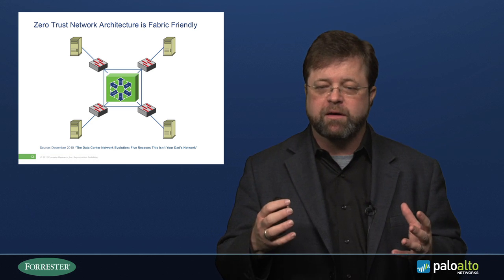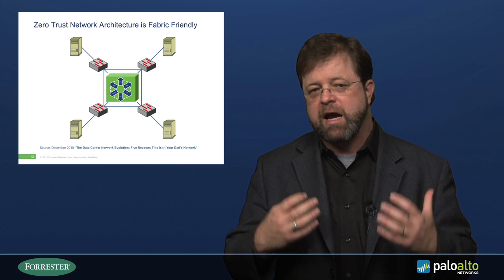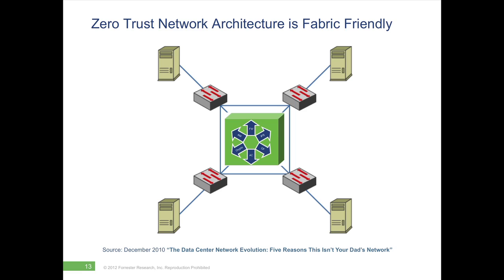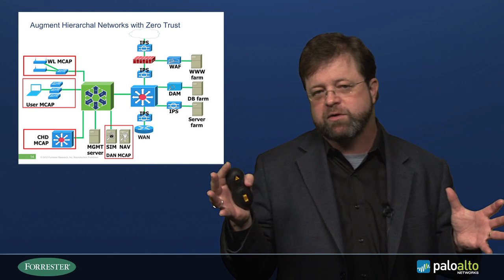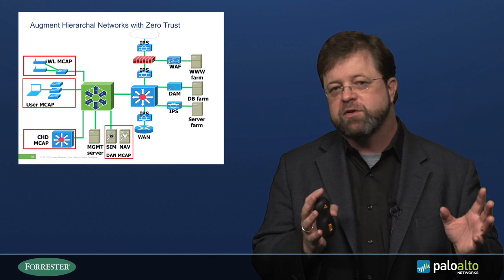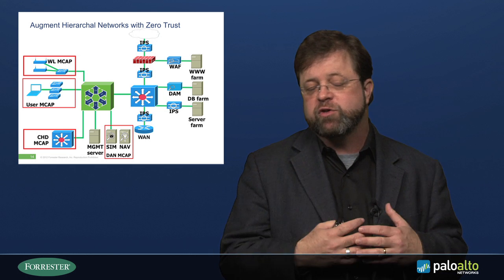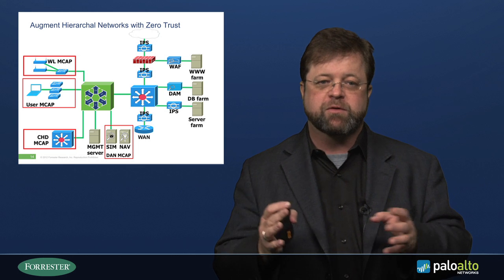Zero Trust is also very fabric-friendly. The advent of fabric networks makes it even easier to deploy Zero Trust and adopt Zero Trust concepts. We can simply place the segmentation gateway in the center of a fabric and have the fabric send traffic to the segmentation gateway to segment the fabric network by default. Zero Trust doesn't mean you'll have to rip and replace your existing networks. Companies doing it today augment their traditional hierarchical network with a Zero Trust network, typically starting with a particular type of traffic or data such as credit card data to meet a specific security objective or compliance initiative, then growing their Zero Trust network over time.